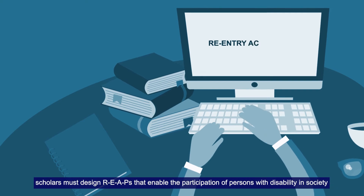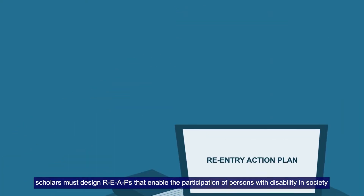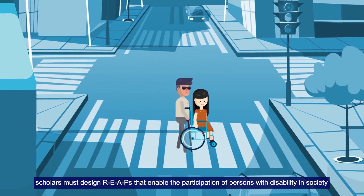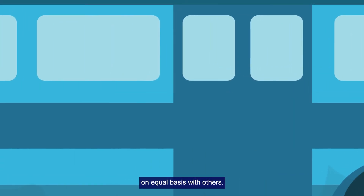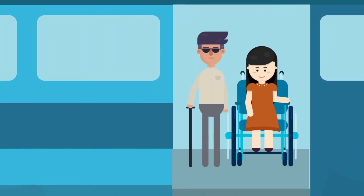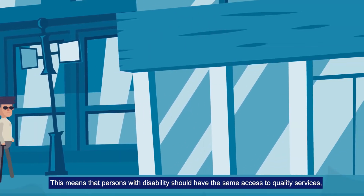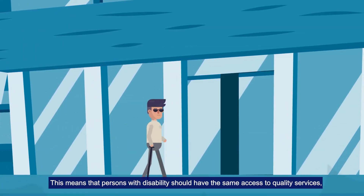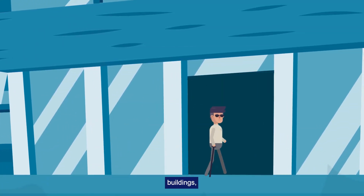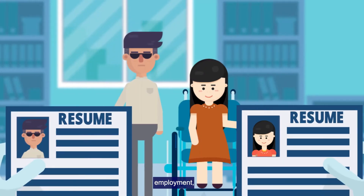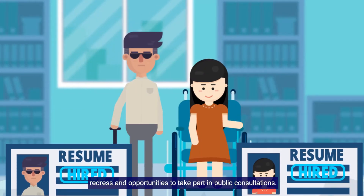In keeping with this, scholars must design REAPs that enable the participation of persons with disability in society on an equal basis with others. This means that persons with disability should have the same access to quality services, buildings, facilities, information, employment, redress, and opportunities to take part in public consultations.